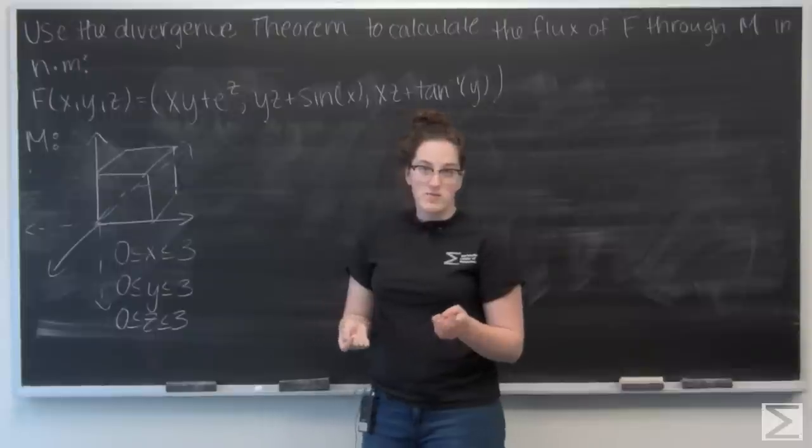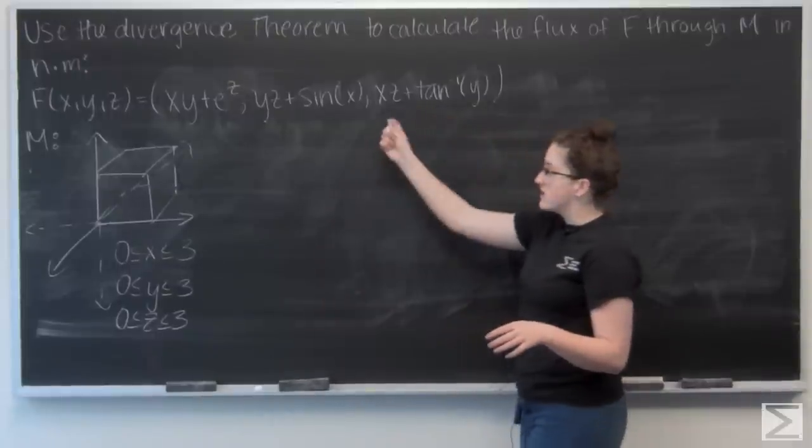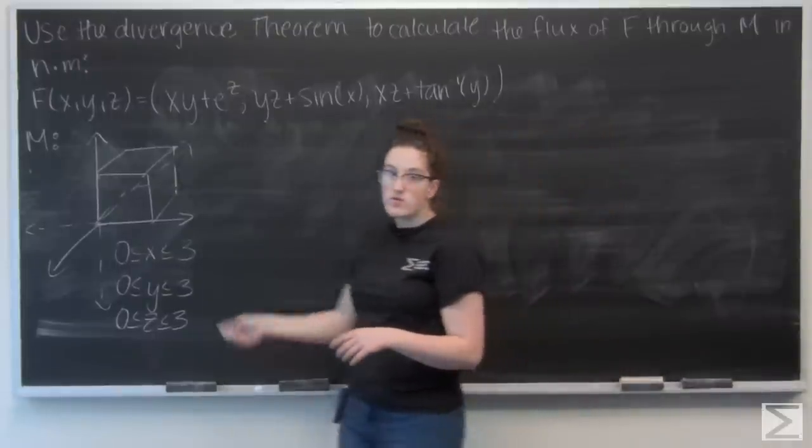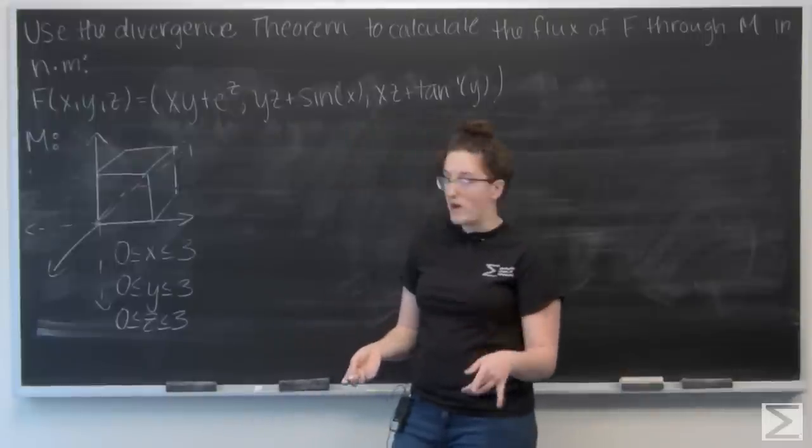So to use the divergence theorem, I want to find the divergence of this given vector field F and then integrate it over the volume of M, and that will give me the flux of F through M.